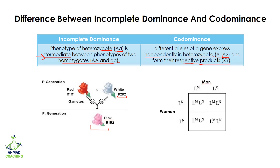Here we can see that a man has blood group M and a woman has blood group N. When allele L^N fuses with allele L^M, giving a genotype of L^M L^N, we get a phenotype of MN. This is the example of co-dominance, in which both alleles are expressing independently.